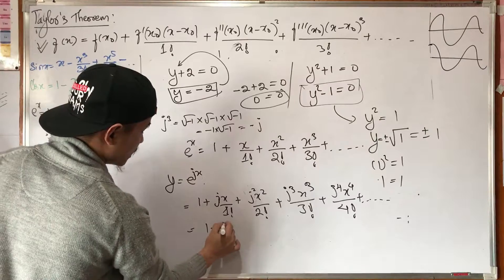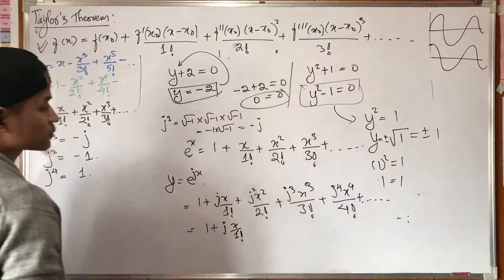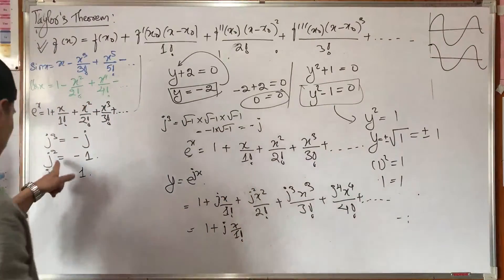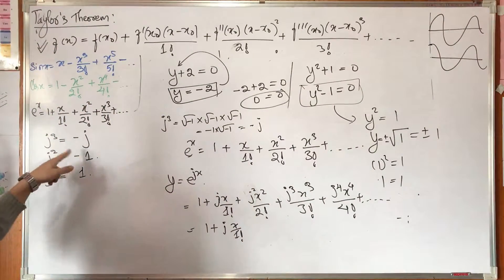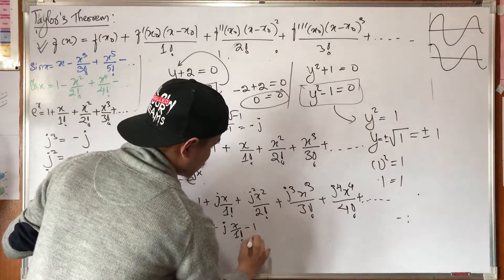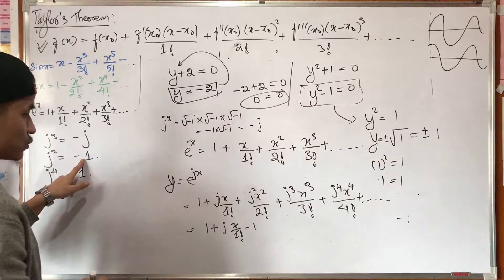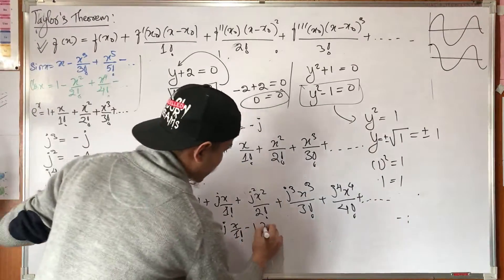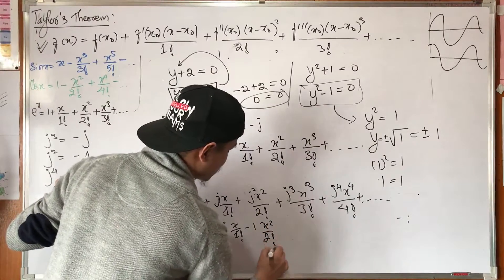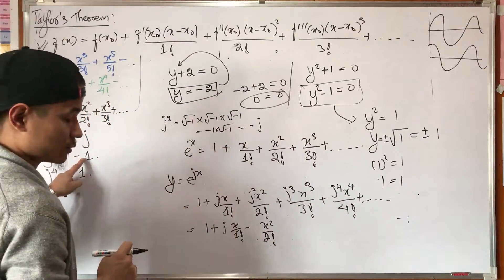Now substituting: jx over 1 factorial — j squared is minus 1, so the x squared over 2 factorial term becomes minus x squared over 2 factorial. Since j squared equals minus 1, we replace it. No need to keep the minus 1 separately — it becomes minus x squared by 2 factorial.